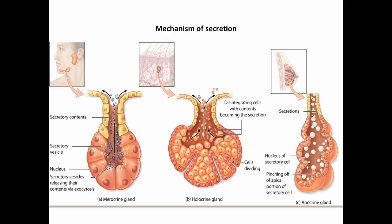There are three main mechanisms of secretion of exocrine glands. There is merocrine secretion, which you've looked at when you've looked at sweat glands. In merocrine secretion, the secretory cells fuse their little vacuoles with the plasma membrane, and the product is then secreted into the lumen of the gland and then carried up through a duct and eventually deposited on the surface of the epithelium.